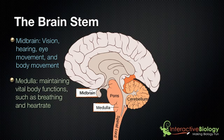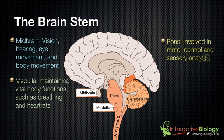You'll notice these are the autonomic processes — the processes that are going to happen whether you think about it or not. These are regulated by the medulla. And last but not least, we have the pons, which is involved in motor control and sensory analysis. So once again, we have the midbrain, the medulla, and the pons, and these three parts make up the brainstem.